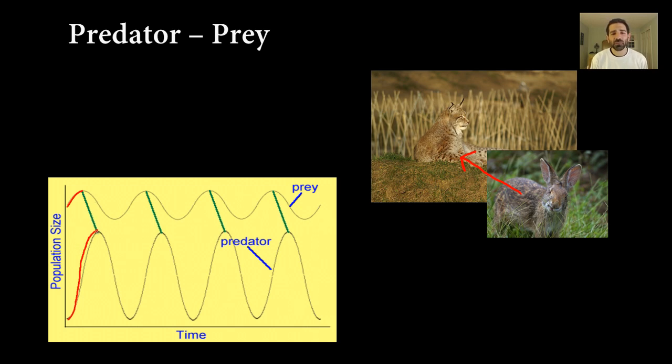Then, as there are a lot of predators in the environment, they're going to eat up all of their prey. And the prey population is going to go down. When there's less prey, there's less food for predators. And there's going to be a corresponding dip, slightly delayed, in their population. And this cycle happens over and over and over.